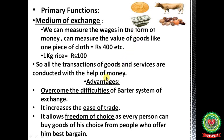Advantages of the primary functions: money overcomes the difficulties of the barter system of exchange, where only commodities are exchanged with other commodities and valuing them is difficult. Money increases the ease of trade — with the measurement of value in terms of money, it is easy for persons to trade with others. It also allows freedom of choice, as every person can buy goods of their choice from people who offer the best bargain.